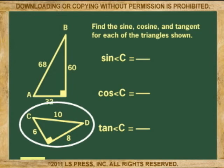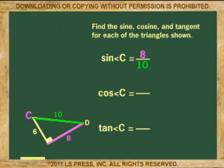For the second triangle, we do the same. The sine of angle C is 8 over 10, opposite over hypotenuse, or 0.8. And the cosine, 6 over 10, adjacent over hypotenuse, or 0.6.